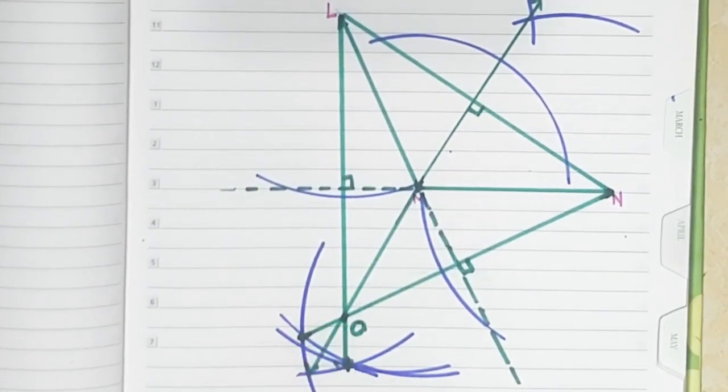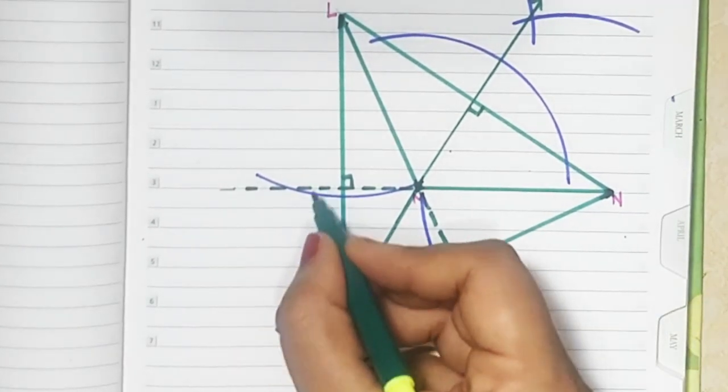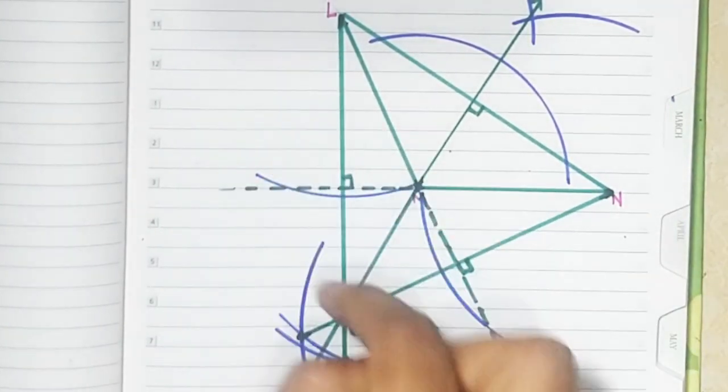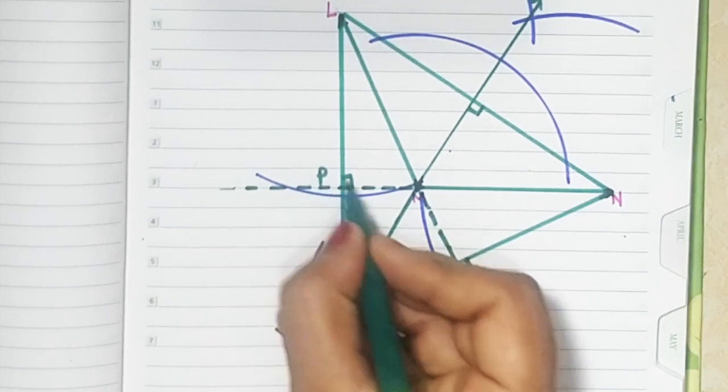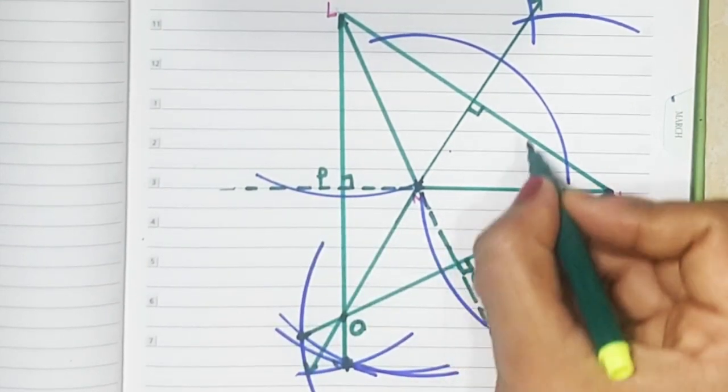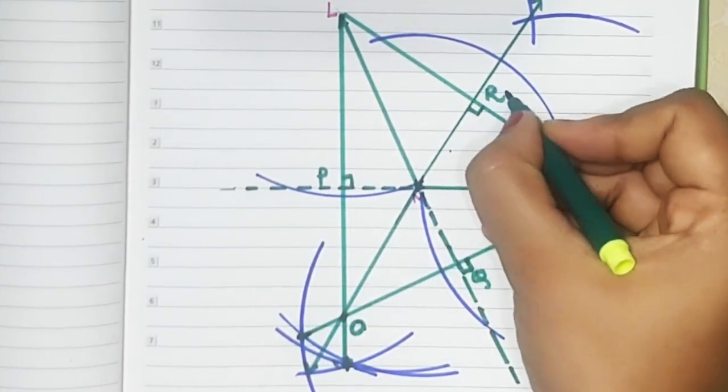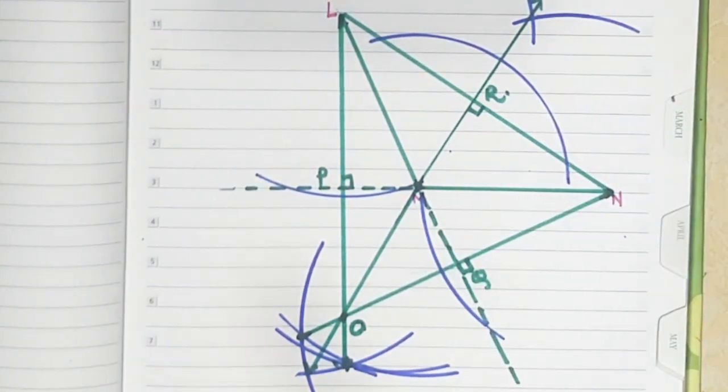I hope this is clear to you. Let's name the altitudes. LMN is the triangle, so let's call the altitudes PQR. I hope this is clear. Thank you.